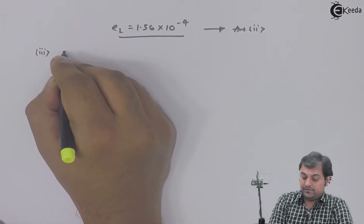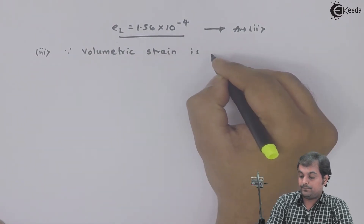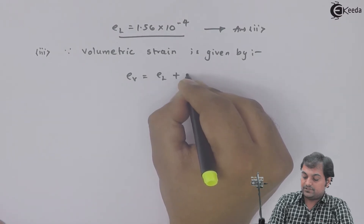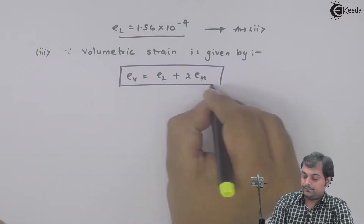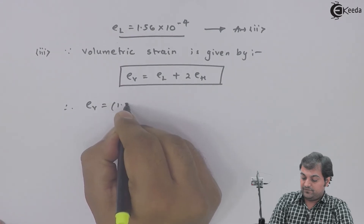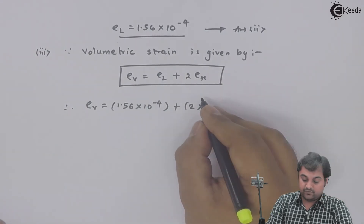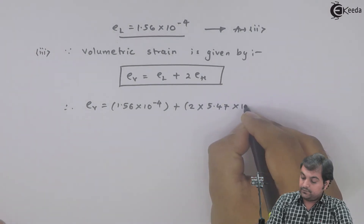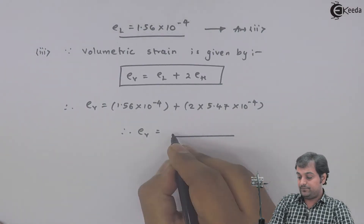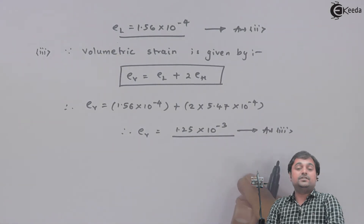Next, the question is volumetric strain. Since volumetric strain = longitudinal strain + 2 × hoop strain, therefore volumetric strain = 1.56×10⁻⁴ + 2 × 5.47×10⁻⁴, which gives volumetric strain as 1.25×10⁻³. That is my third answer.